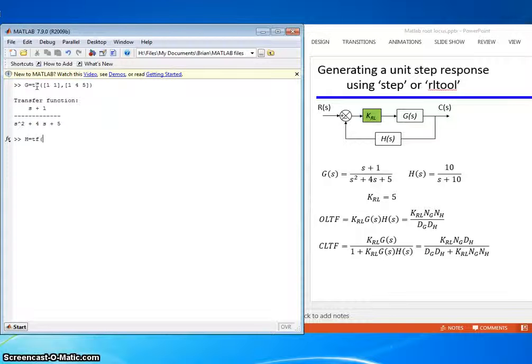H equals Tf, 1, 10. There's H, and KRL equals 5.